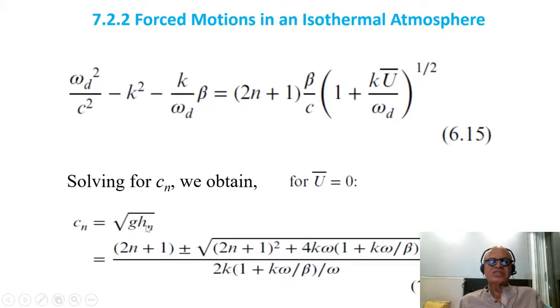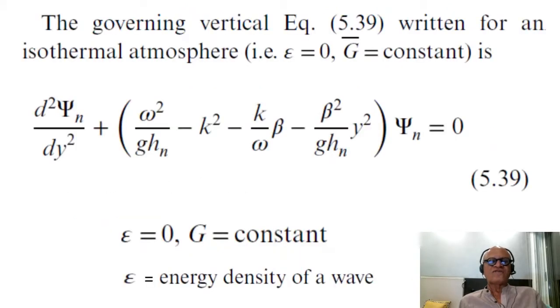With the Hn being the equivalent depth for the vertical modes for a stationary state. Then we end up with this nice relation as a function of longitudinal wave number, frequency and beta. Beta is always there because we are on a beta plane and it's the strong restoring force for the Rossby waves.